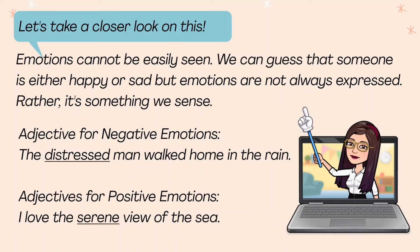Adjectives have negative and positive emotions. Here is a sample of adjectives for negative emotions: 'The distressed man walked home in the rain.' And here is an example for adjectives for positive emotions: 'I love the serene view of the sea.' The underlined words are adjectives that express emotions.